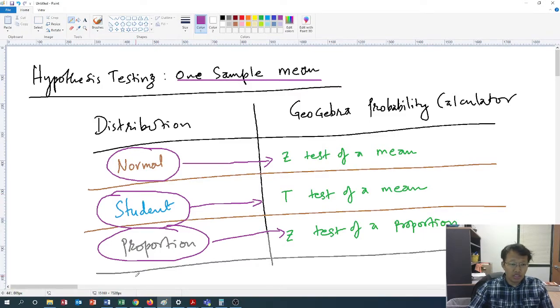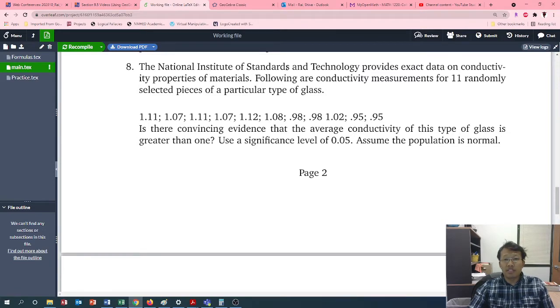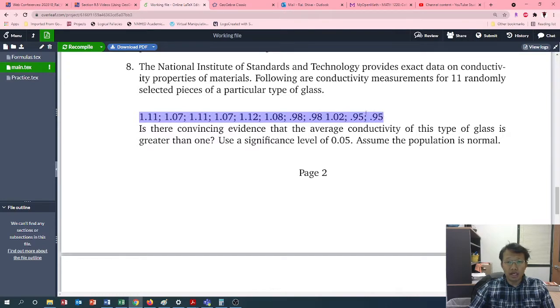Let's head over to the question. The National Institutes of Standards and Technology provides exact data on conductivity properties of materials. Following are conductivity measurements for 11 randomly selected pieces of a particular type of glass. So this is the data right there, there are 11.